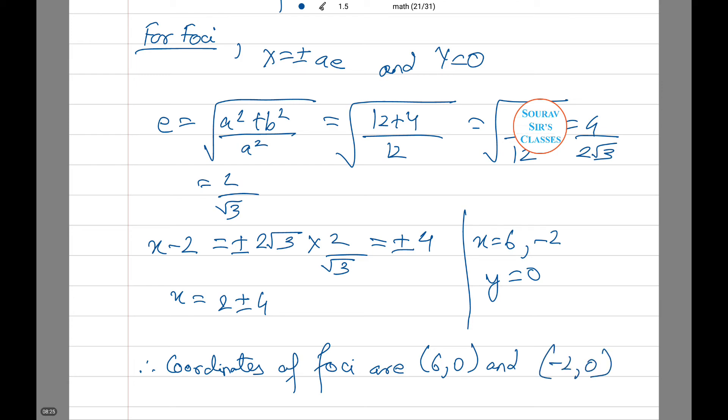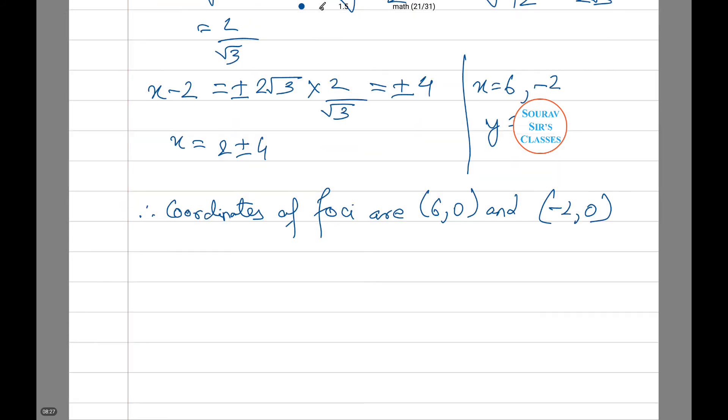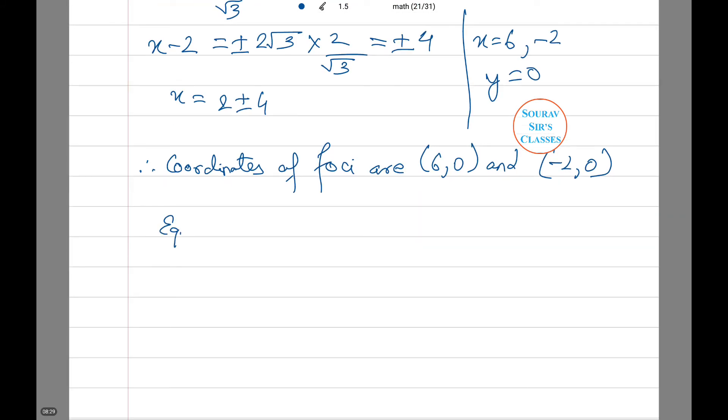So now we find the equation of the directrix. x equals plus minus a by e, that is x minus 2 equals plus minus 2 root 3 by 2 by root 3.